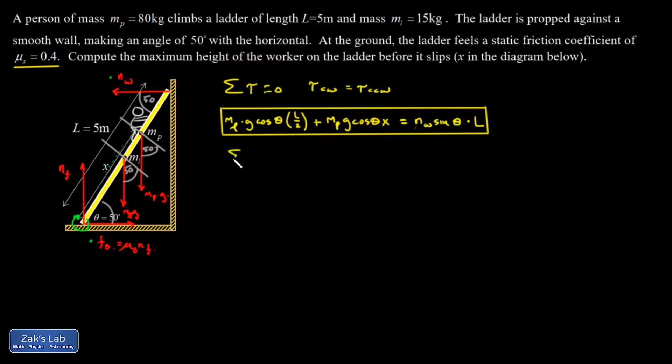And the first thing I'll do is to write down the sum of the forces in the X direction must be equal to zero. That means all the forces pointing to the right must be equal to all the forces pointing to the left. And there's not much going on there. I have the friction force pointing to the right, and I have the normal force exerted by the wall pointing to the left. So there's my second equation.